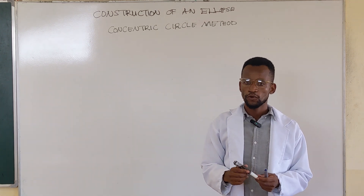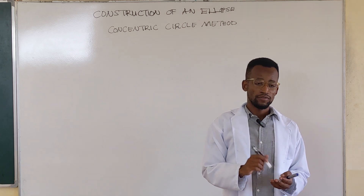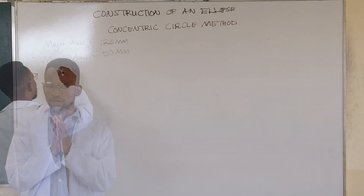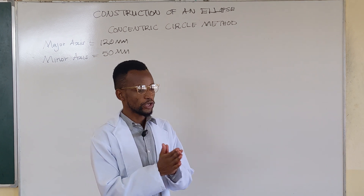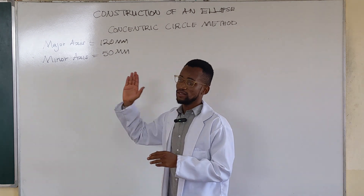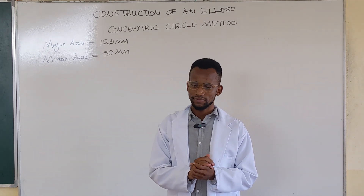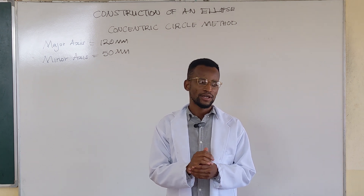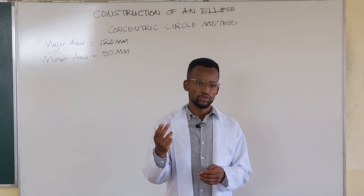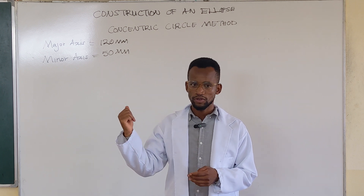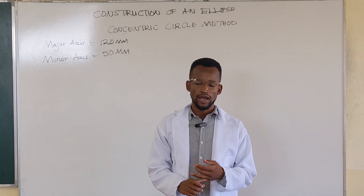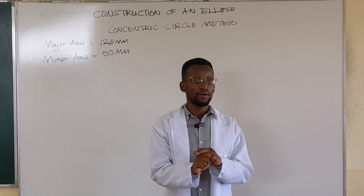In this example, we're going to construct an ellipse given the major axis as 120 millimeters and the minor axis as 50 millimeters. When constructing an ellipse using the concentric circle method, the major axis represents the diameter of the bigger circle and the minor axis represents the diameter of the smaller circle.